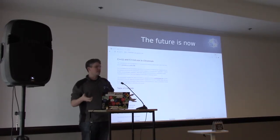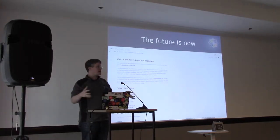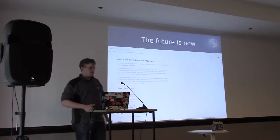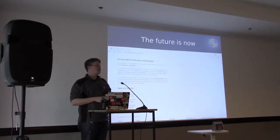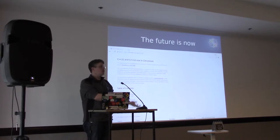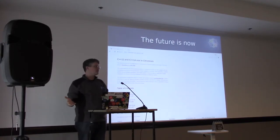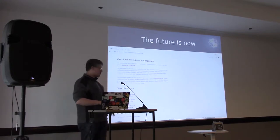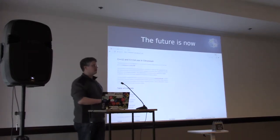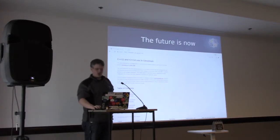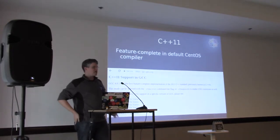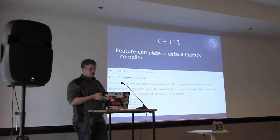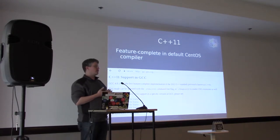Estimates are that Google has three to four digits worth of people who work full time and do nothing but Chromium. So they have to document a lot of things from a style guide and language perspective to control the madness. They have a page documenting C++11 and C++14 use in Chromium — what features you can use, what you can't, what they don't want included. As far as C++11 is concerned, the compiler in CentOS 7 is good enough. We have all the features necessary for full C++11 compliance.